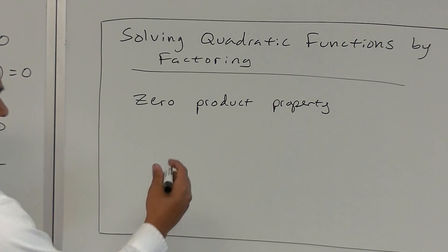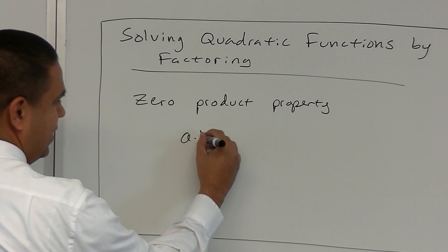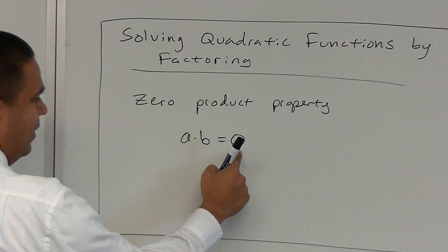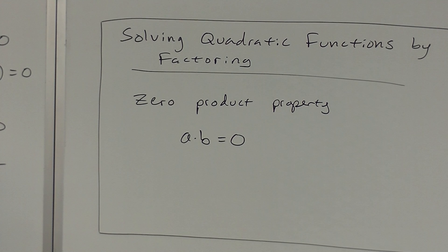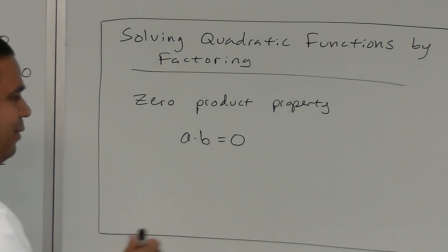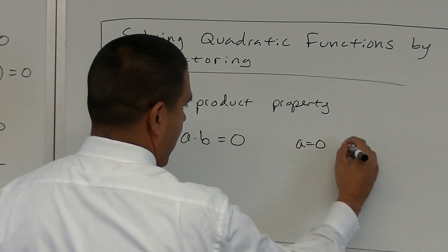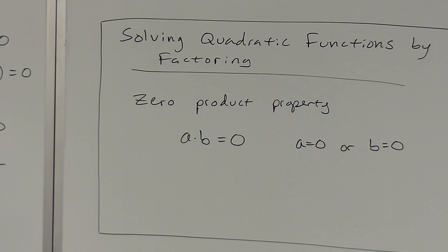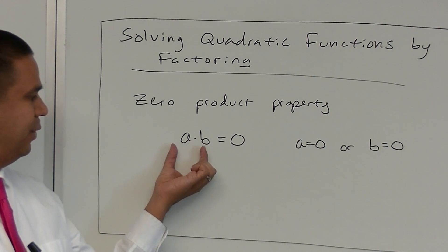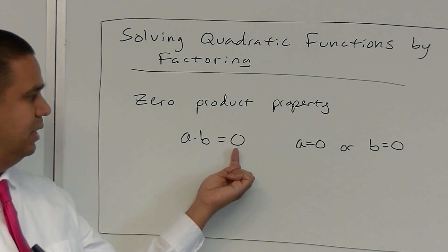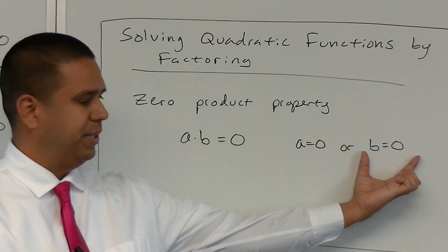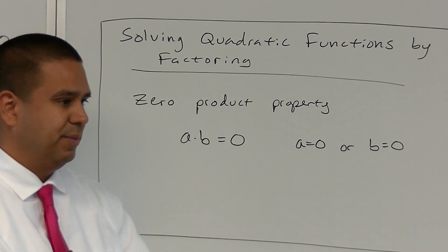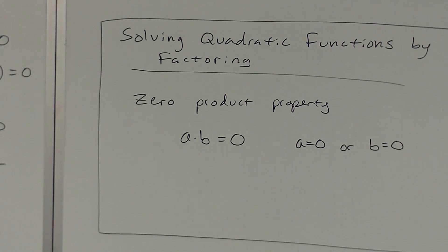You guys remember what that was? If we take two numbers and multiply them and the answer is zero, then one of those numbers has to be zero. Sometimes students tend to miss that. So if we take two numbers and multiply them and the result is zero, then that tells us a is zero or b is zero — but one of them has to be zero. We're going to use that property today.